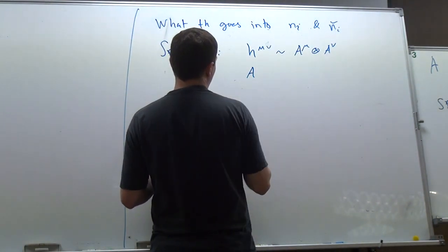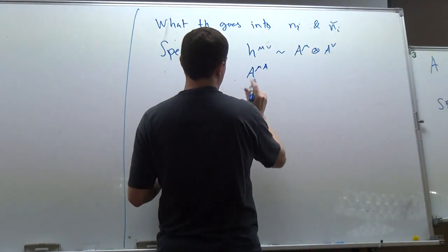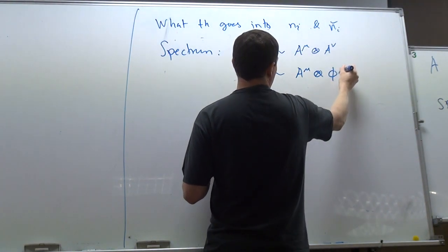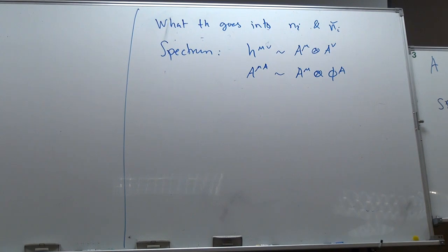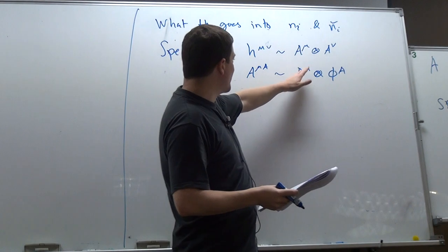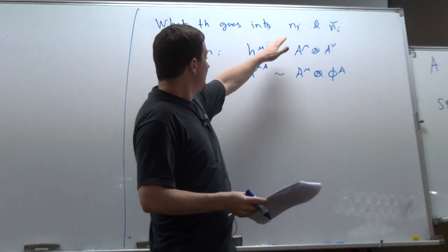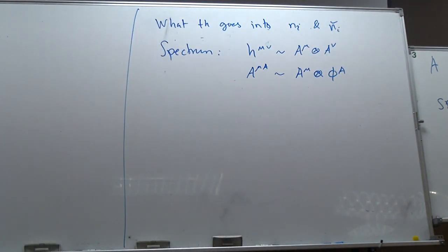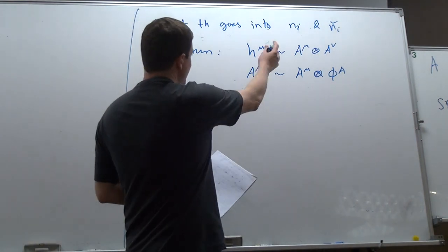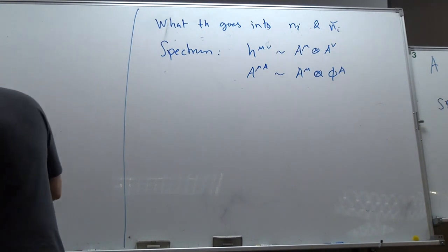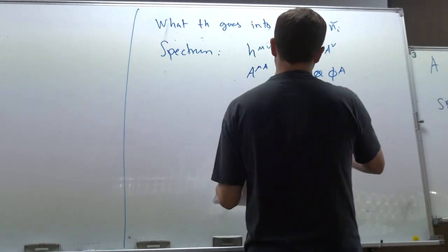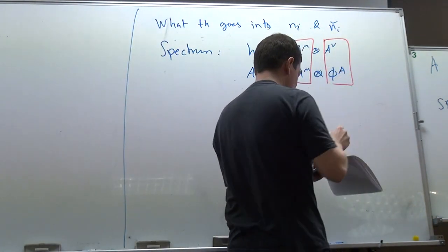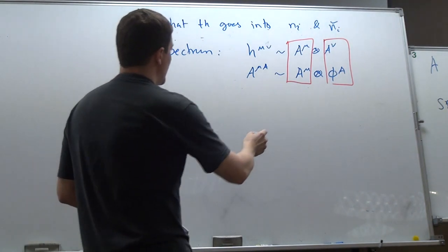Similarly, if I have my Yang-Mills field with a spacetime index and a group index, it looks like I can also factorize that in terms of A-mu and a scalar which carries the group index. Now this looks a bit funny because I don't have group indices on the gravity side, but remember when we construct double copies we always drop the color structure — that's why I also dropped the color structure here and suppressed the group index.